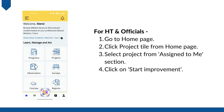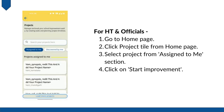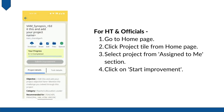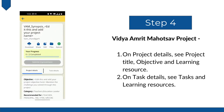If you have chosen H.T. and officials, take the following steps to access your project. Go to the home page and click on the project tile. Click on the Vidya Amrit Mahotsav project for your state under the 'Assigned to me' section. Click on 'Start improvement' to start your project. You will now be able to see the Vidya Amrit Mahotsav project.